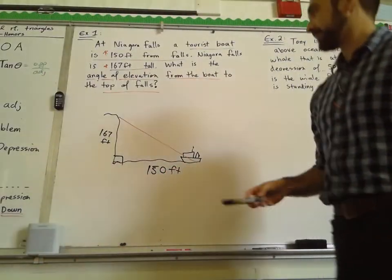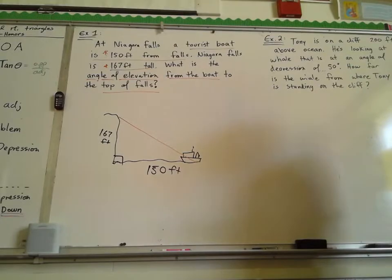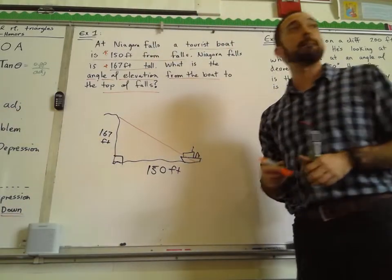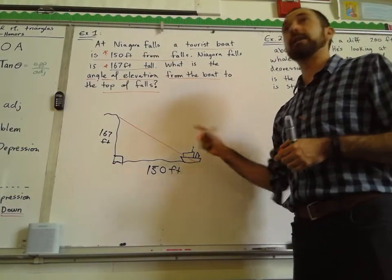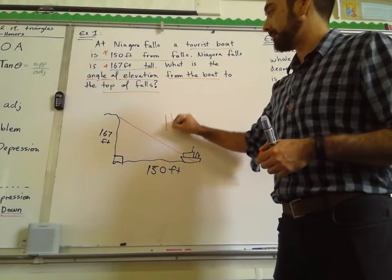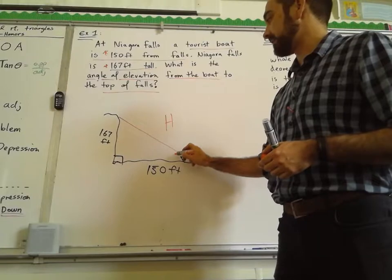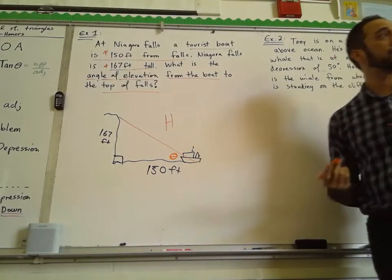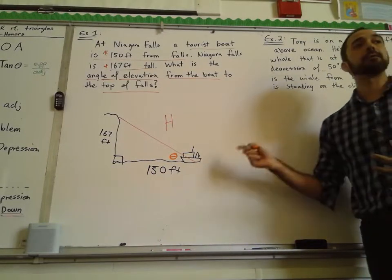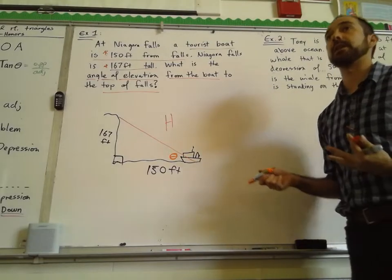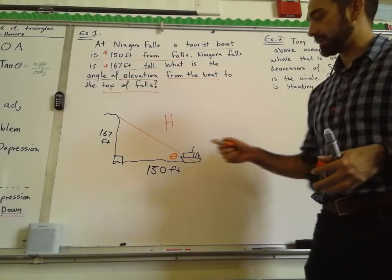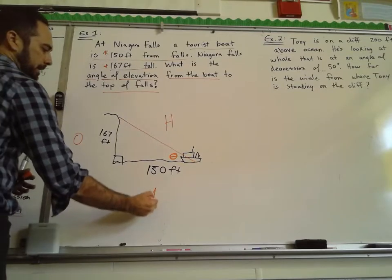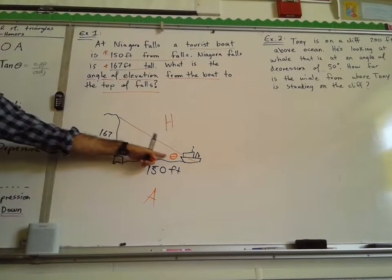Let's do our process that we're going to use every single time. Identify your hypotenuse, opposite, and adjacent. Which is the hypotenuse for this problem? Remember, here is my angle of elevation I'm looking for — put your theta right there, that's what I'm looking for. It might be helpful to draw the diagram. Compared to this theta, which is the opposite side? I know I'm looking for theta, so I'm going to use two of the sides to help me find that angle. Which sides are in play?